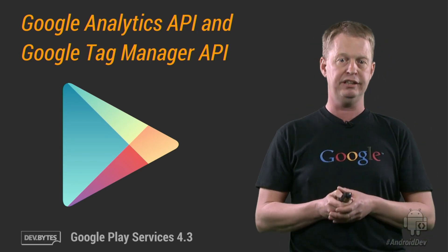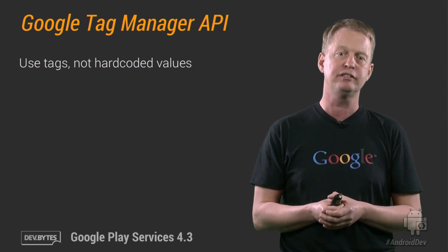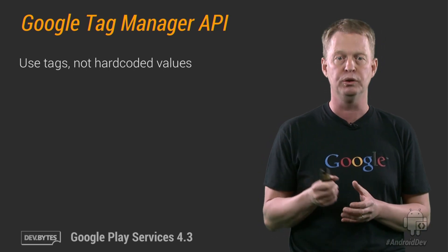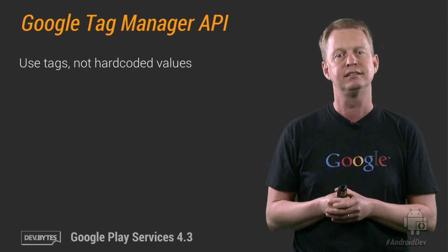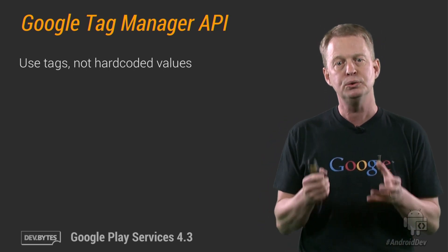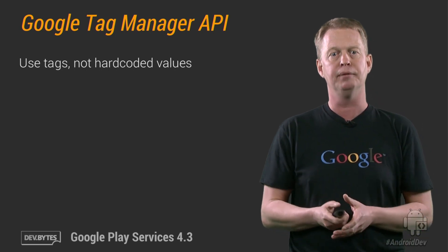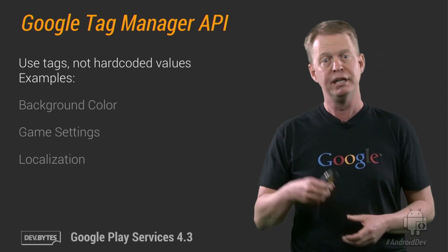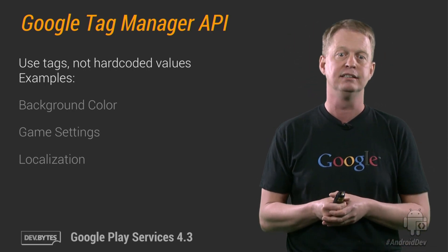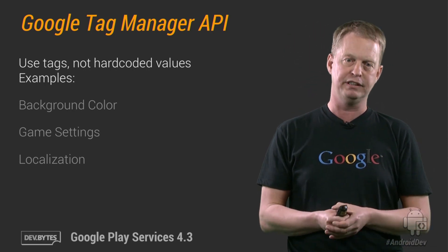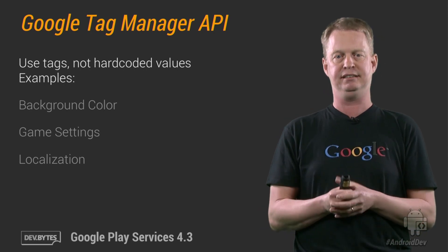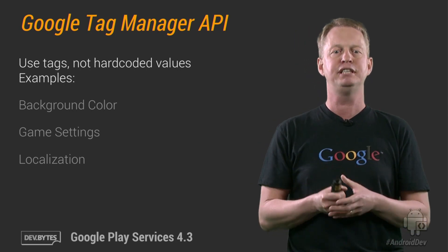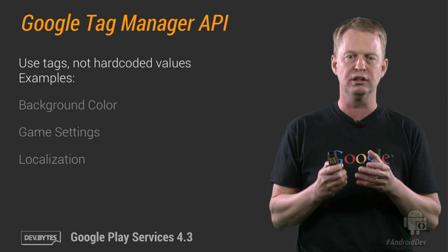So let's look at what these APIs contain. We'll start off with the Google Tag Manager, which lets you use tags in your apps instead of hard-coding values. These tags are then substituted for values that you have stored in the Tag Manager at runtime. This can, for example, be used to manage background colors of your app, game settings, and localization settings. Since the values of the tags are stored in the Tag Manager, this eliminates the need to push your entire app from Google Play again — you can simply change the value of the tag in the Google Tag Manager.